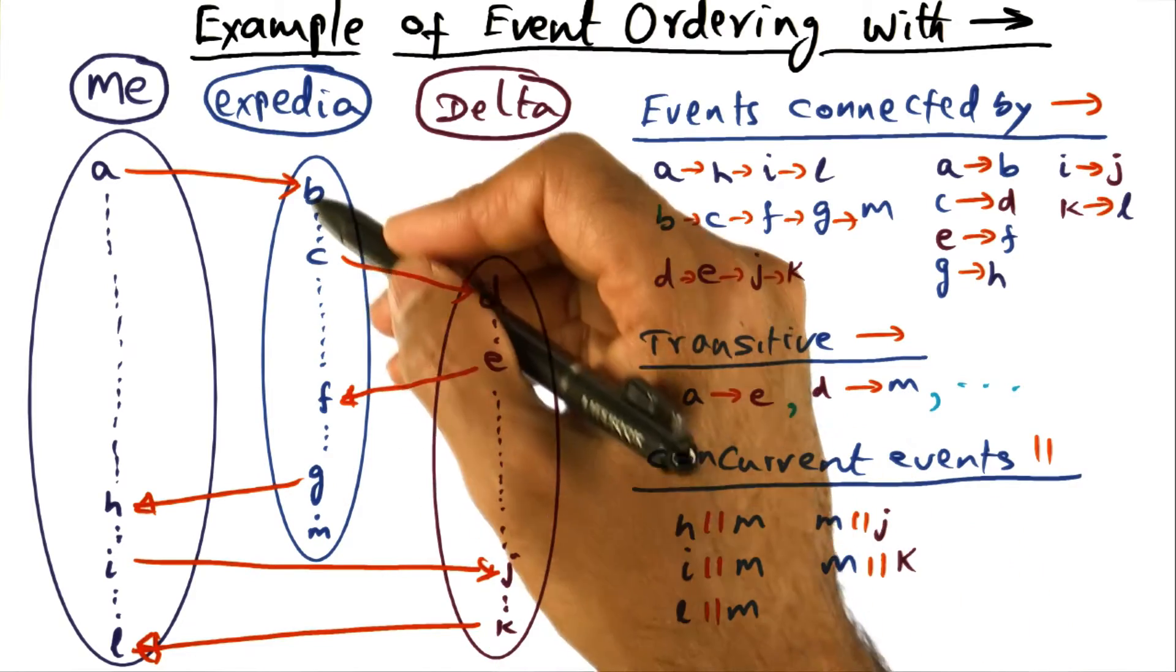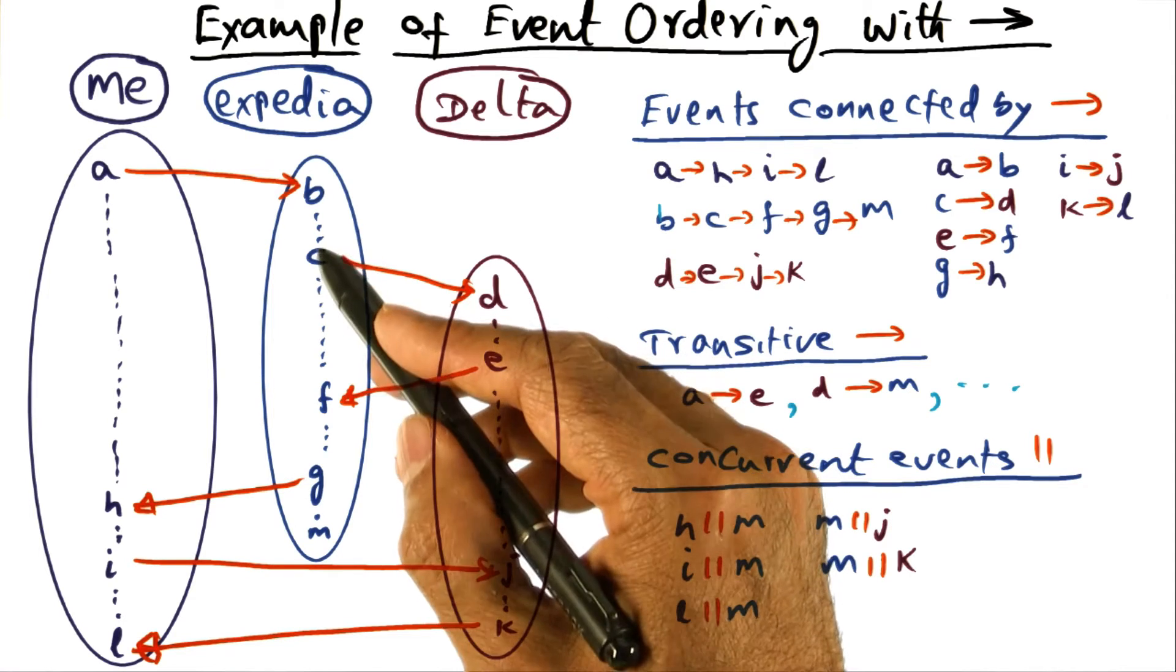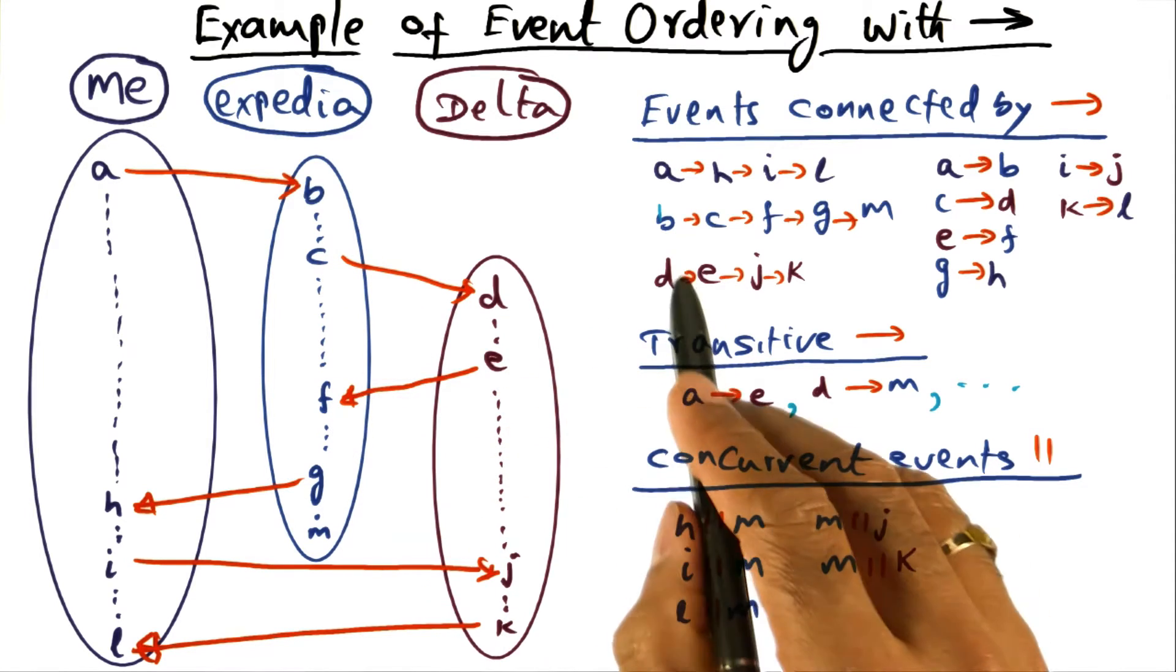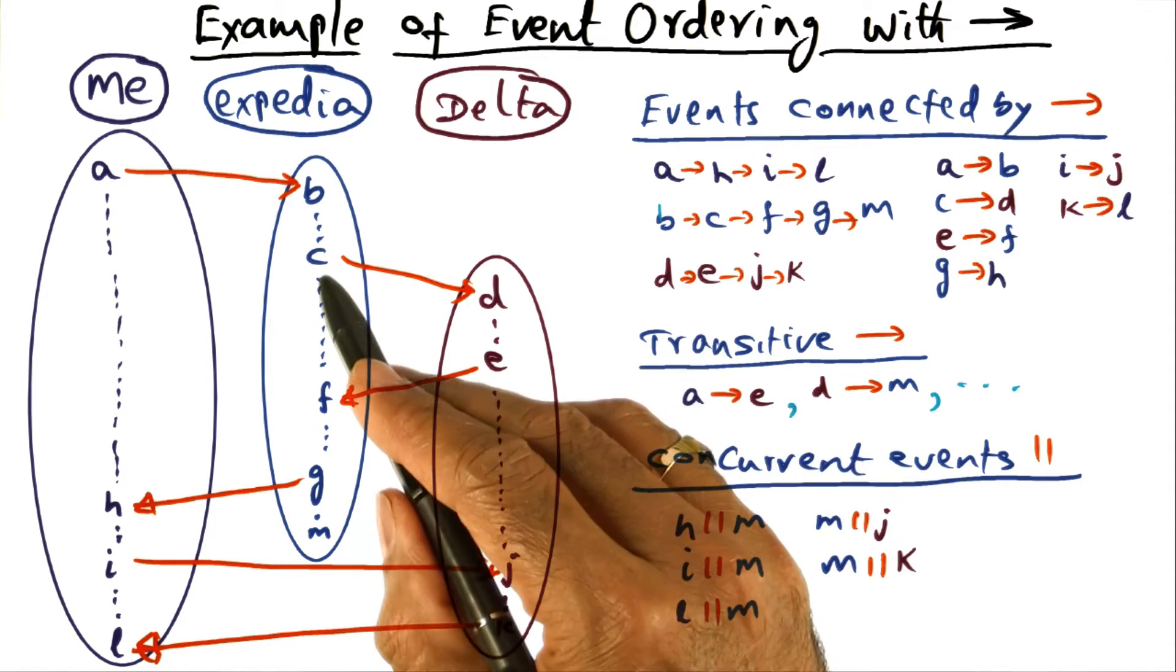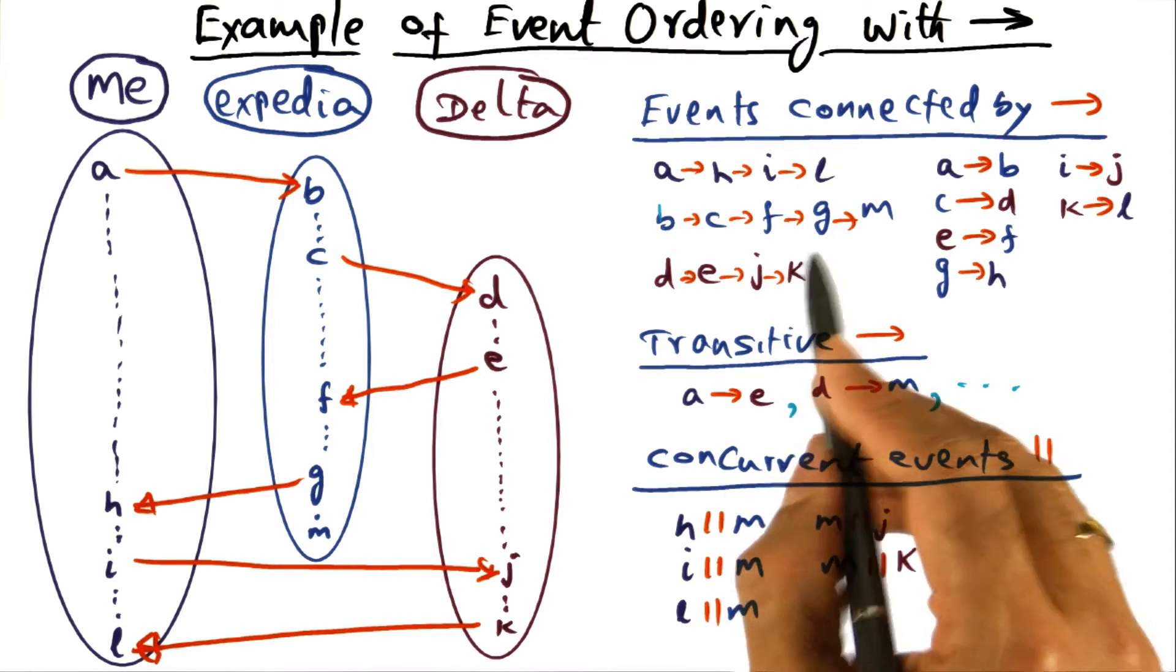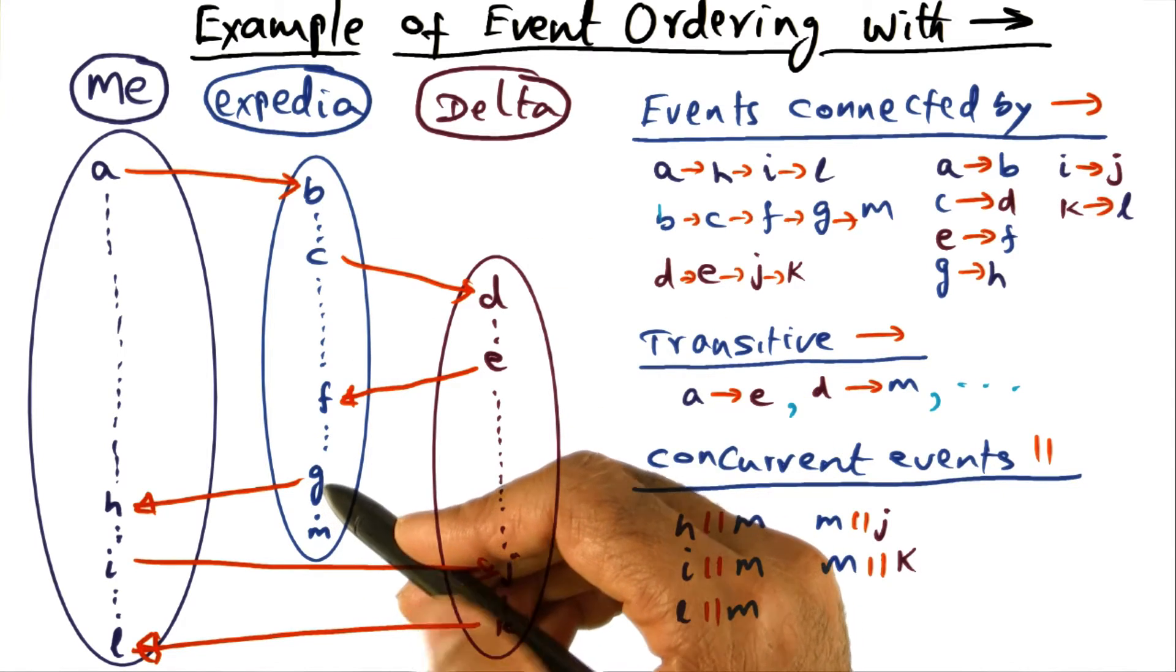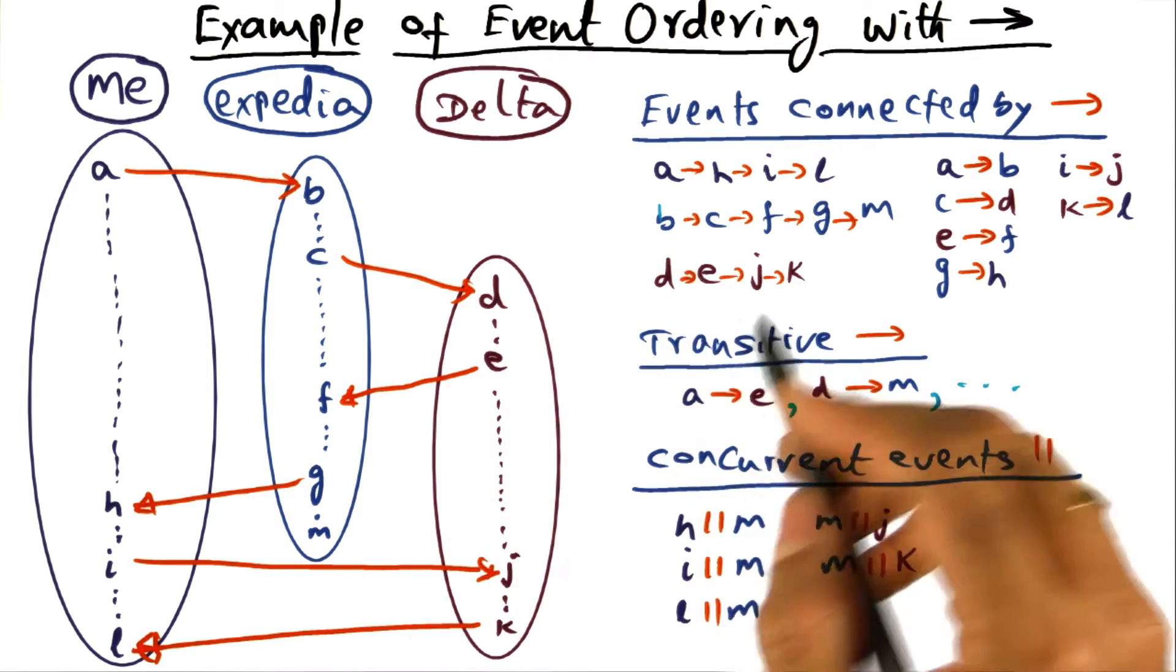And similarly, we can see that if these are the events in Expedia's process, then all these events have to be sequentially ordered. So B should have happened before C, C should have happened before F, F should have happened before G, and G should have happened before M. So these are the orderings of the events in Expedia's process.